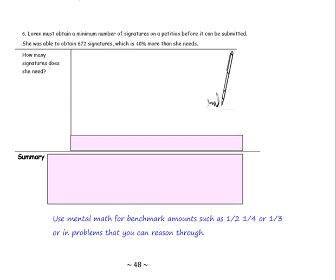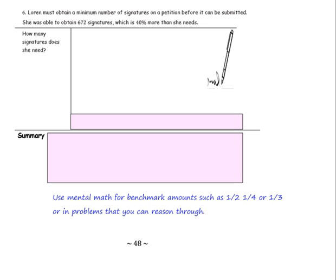Number 6. Lauren must obtain a minimum number of signatures on a petition before it can be submitted. She was able to obtain 672 signatures which is 40% more than she needs. Okay, so we're comparing it to the amount that she needs. More than she needs. So what she needs is the whole.